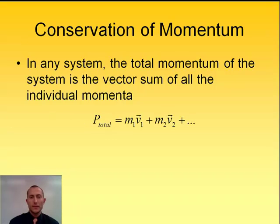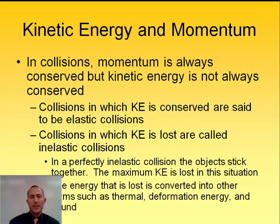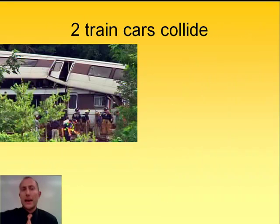Hopefully this looks familiar. What that means is that if we look at all the objects in the system, all of those individual momenta are going to be conserved. And what we find though, let's look at a sample here, an example of two train cars colliding.